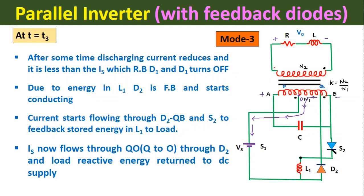Mode 3 operation starts at time t = t3. As discussed, the capacitor was discharging in Mode 2, and after some time the discharging current reduces below the source current. Since D1 was conducting due to the capacitor discharging current, when that current falls below the source current, D1 turns off. During capacitor discharge, inductor L1 stores energy. Due to the energy stored in L1, its voltage polarity is positive on one terminal, causing D2 diode to turn on in Mode 3.